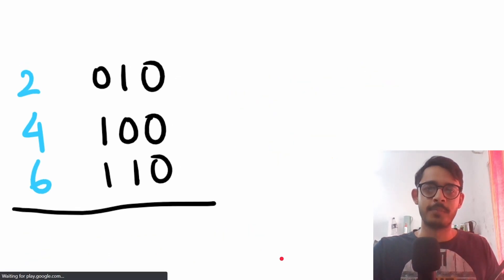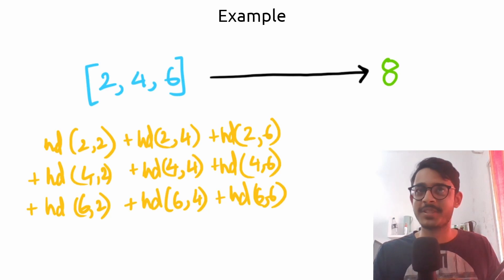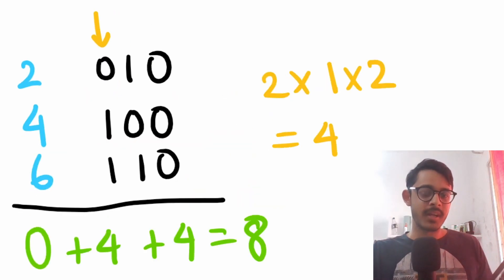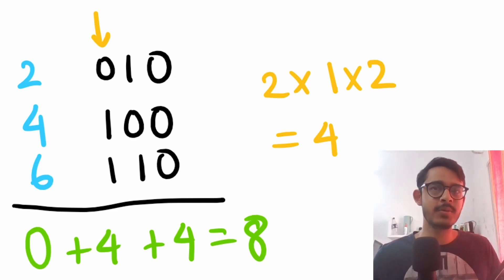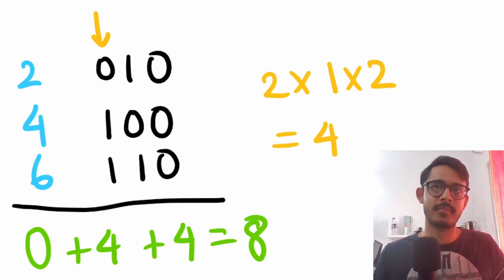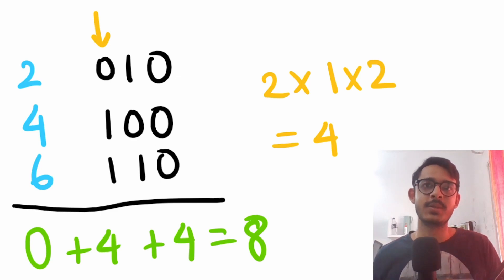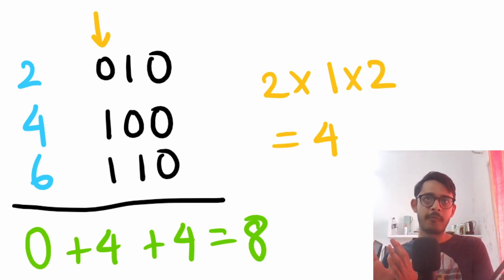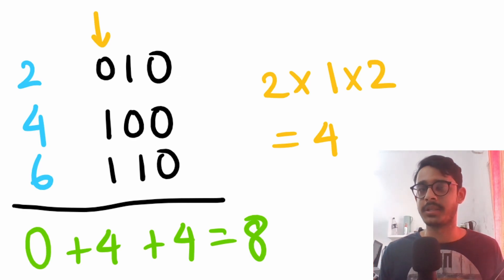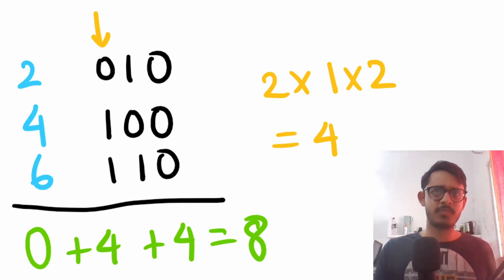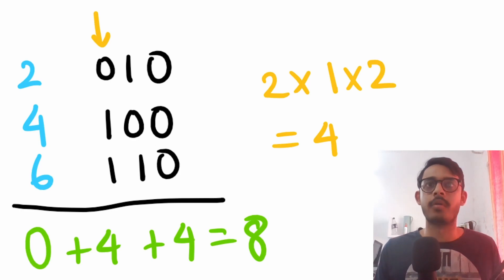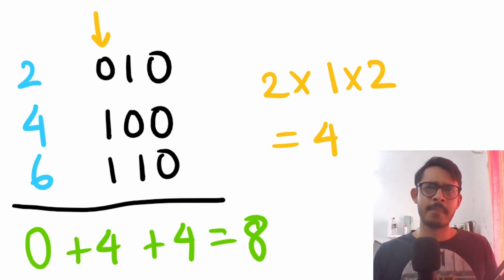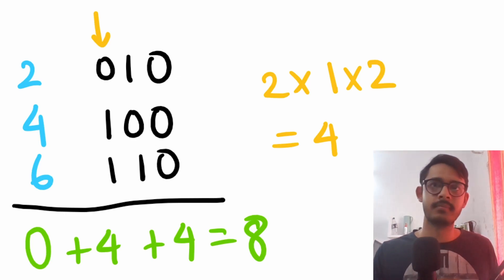We confirmed the answer is 8, matching our earlier brute force result. In these three iterations, each scanning all n values, we found the answer. The total time complexity is O(number_of_bits × n). Since number of bits won't exceed 32, it's effectively O(n). We found an optimized solution.